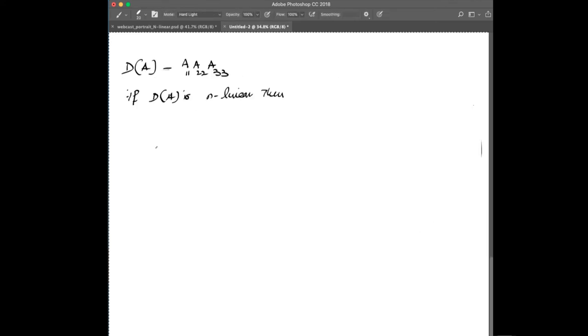In the second example, D of A is the product of the diagonals, so a11 times a22 times a33. In this simple example, I'll show quickly that this indeed is a 3-linear, n-linear function.